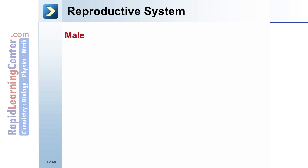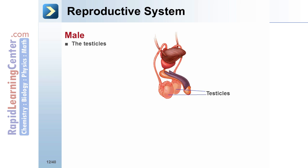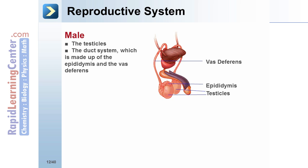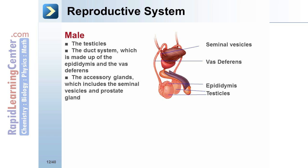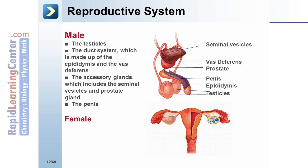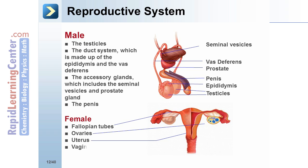Reproductive system — male: composed of the testicles, the duct system (epididymis and vas deferens), accessory glands (seminal vesicle and prostate gland), and the penis. Female: composed of the fallopian tubes, ovaries, uterus, vagina, accessory glands, and external genitalia organs.